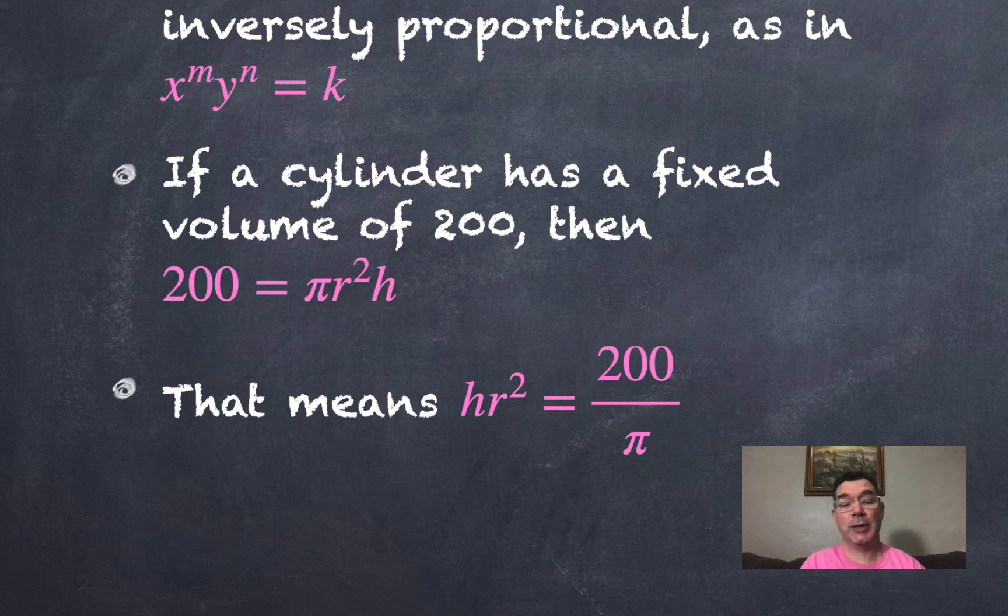And since h is a variable and r is a variable that is being squared, and because I am multiplying those two things together and getting the same constant 200 over π, then I know that h and r squared are inversely proportional.